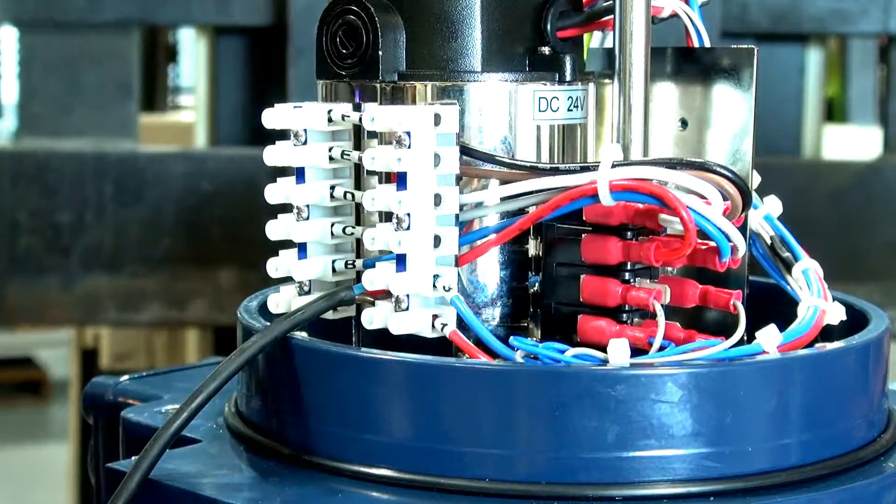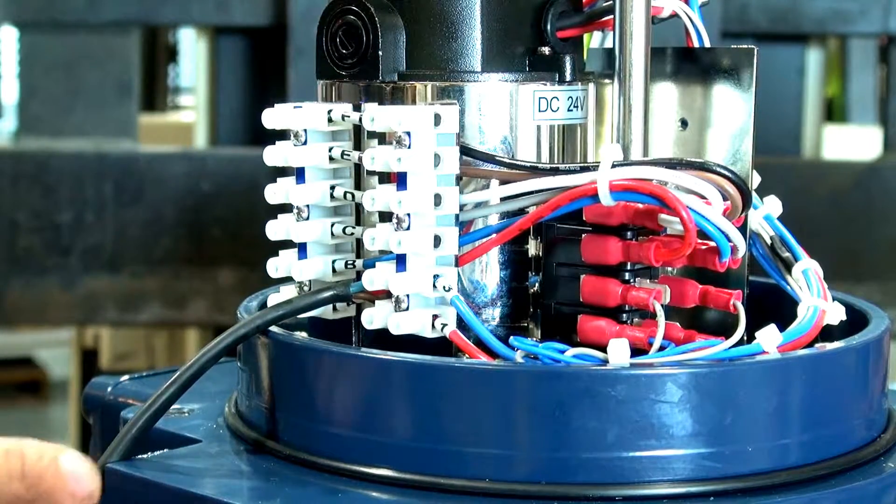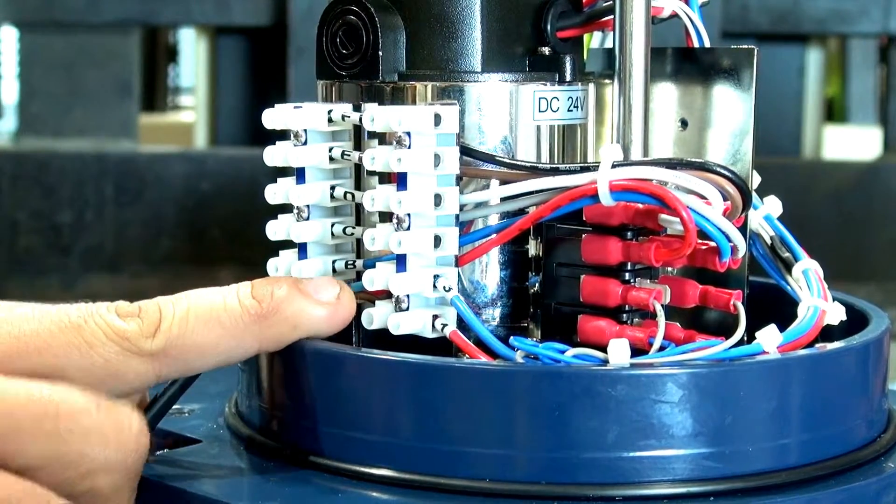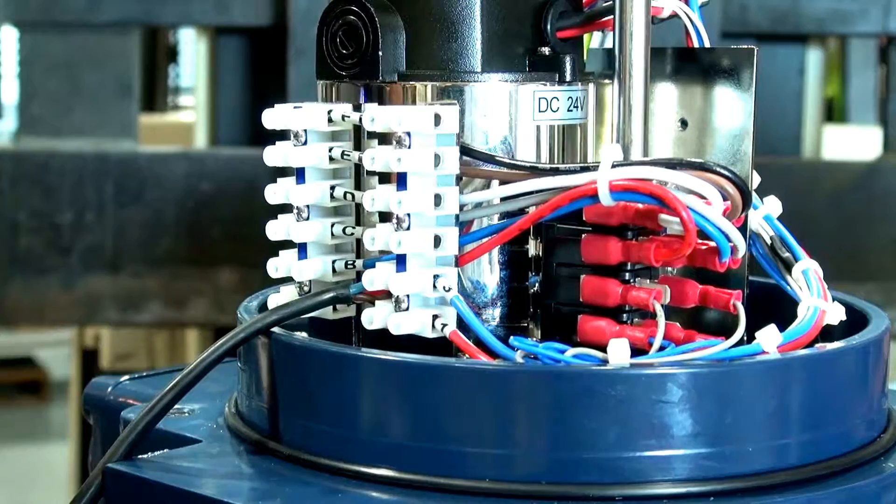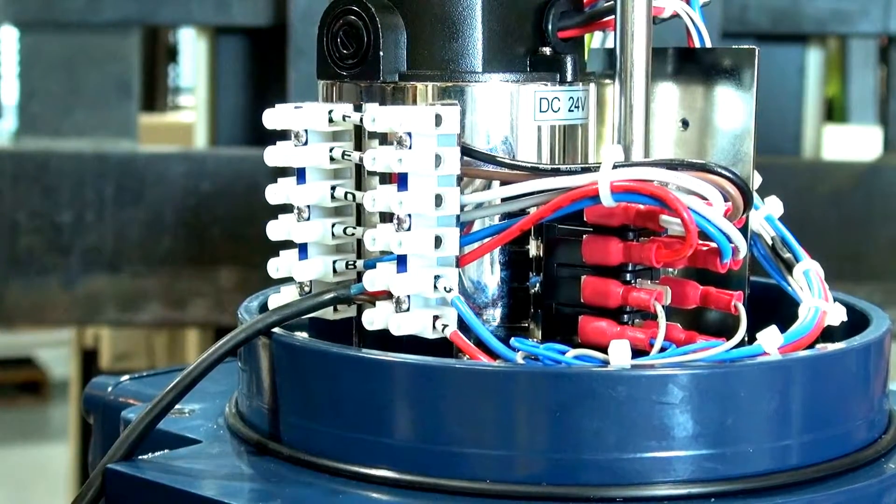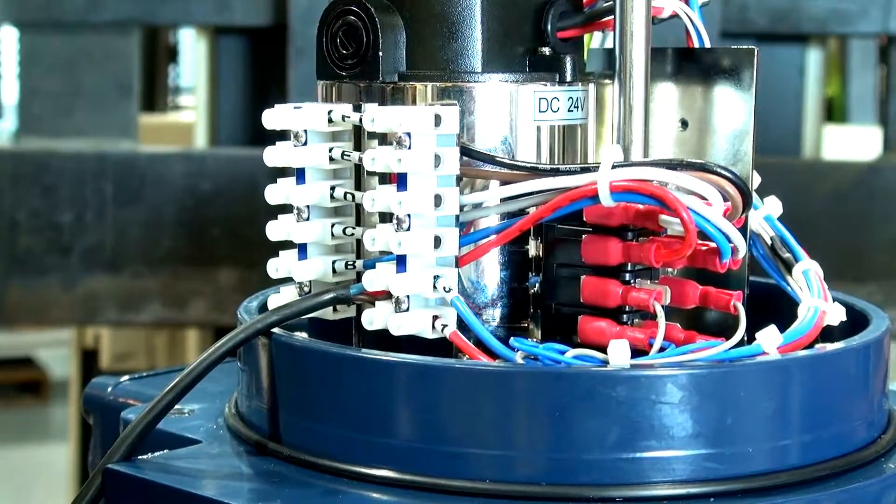This unit is a 24V DC unit and the wiring is pretty straightforward. We've got positive going into number one on the terminal block and negative going into three of the terminal block. As a spring return unit, it doesn't require power to close, so it just requires a switch to power it on and to operate the unit.